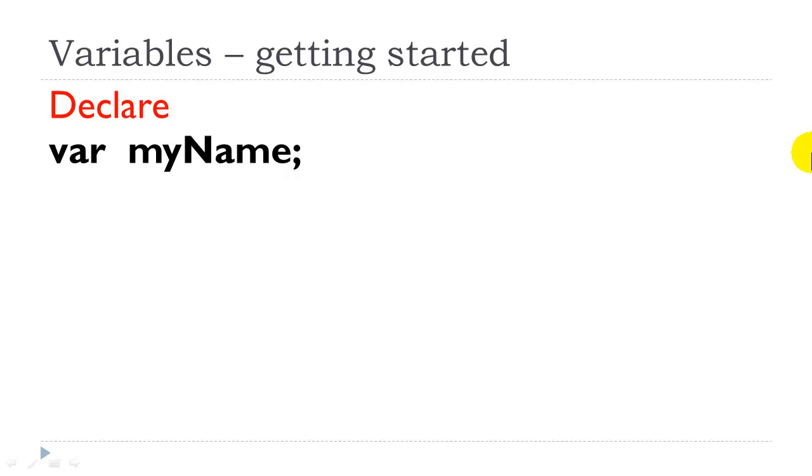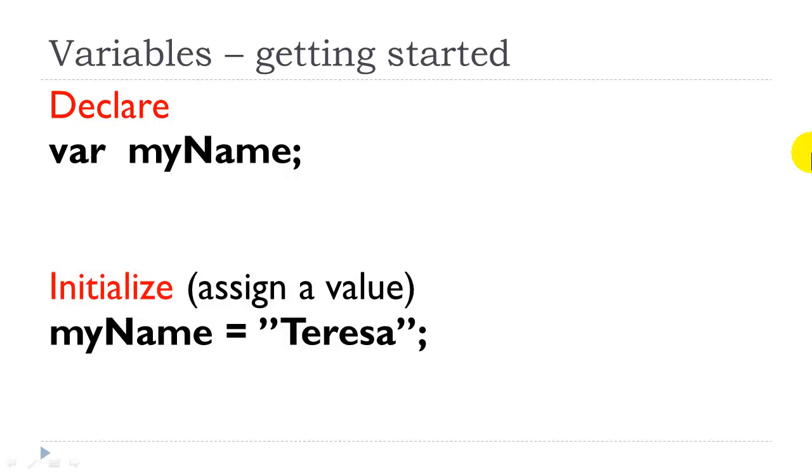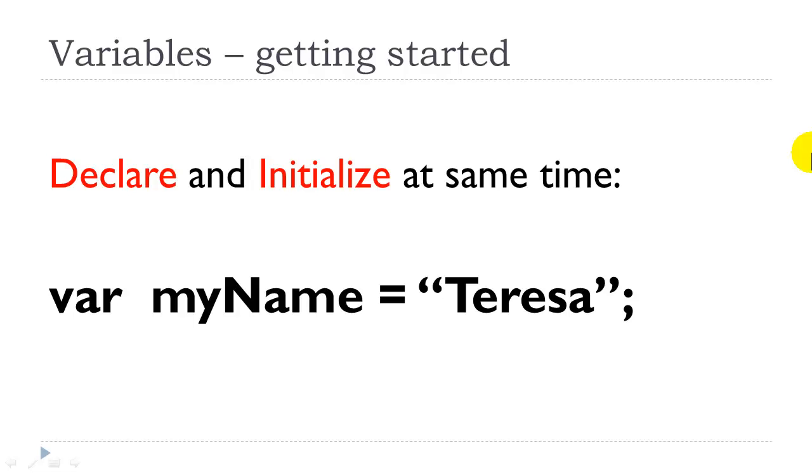So you can declare a variable and then later on you can initialize it or assign a value to it. Or you can declare and initialize it at the same time.